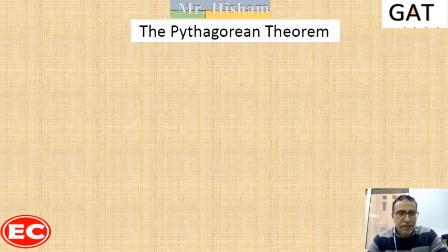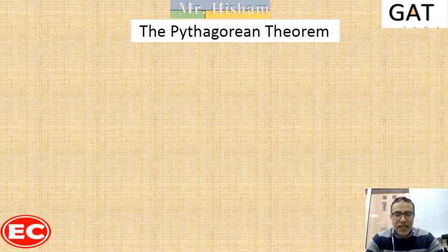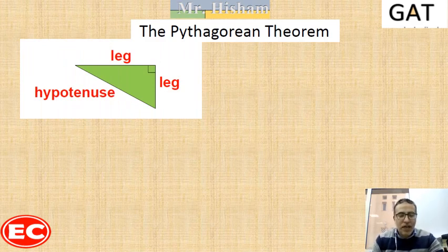The Pythagorean theorem is related to the right angle triangle. I can't apply the Pythagorean theorem for any triangle except the right angle triangle. As we know, in the right angle triangle we have two sides.